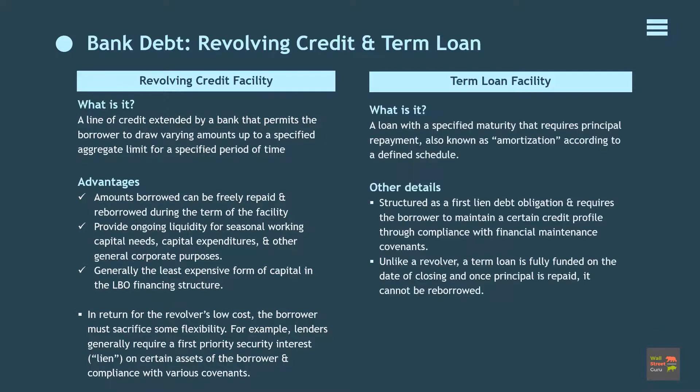A term loan is a loan with a specified maturity that requires principal repayment, also known as amortization, according to a defined schedule, typically on a quarterly basis. A traditional term loan for an LBO financing is structured as a first-lien debt obligation and requires the borrower to maintain a certain credit profile through compliance with financial maintenance covenants contained in the credit agreement. Unlike a revolver, however, a term loan is fully funded on the date of closing and once principal is repaid it cannot be reborrowed.